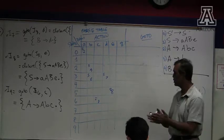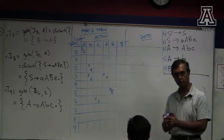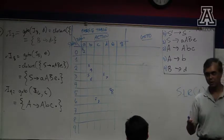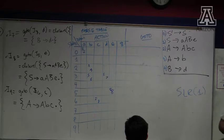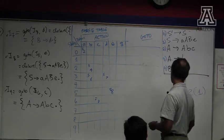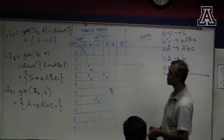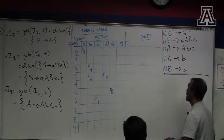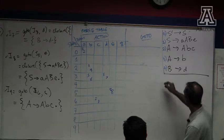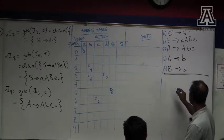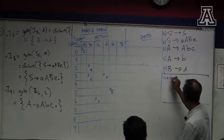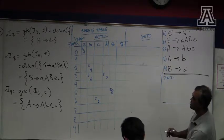For reduce actions, I need first sets and follow sets — there's no getting away from that. Let's compute first sets. The easy stuff: first of the token a is just {a}, and similarly first of b, c, d, and e are just those tokens.